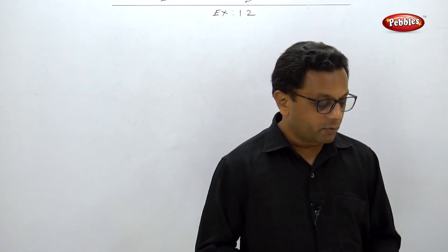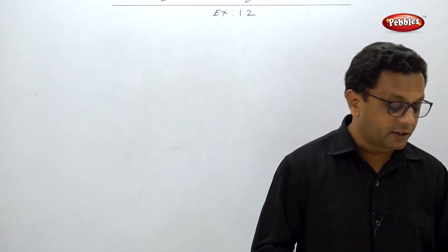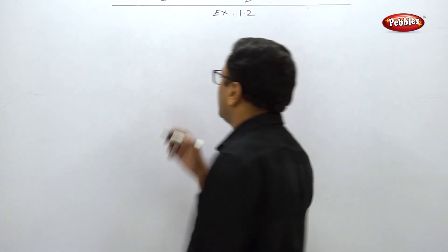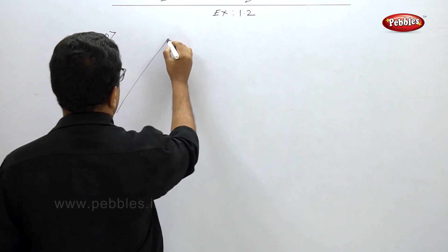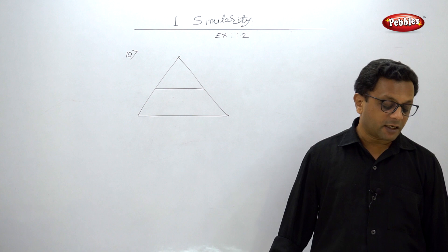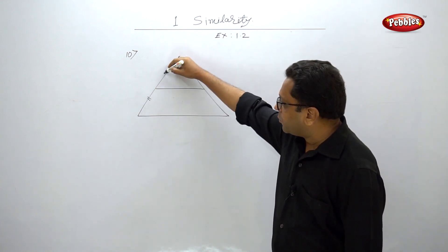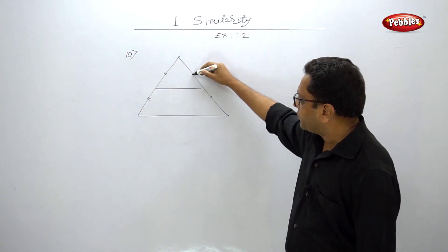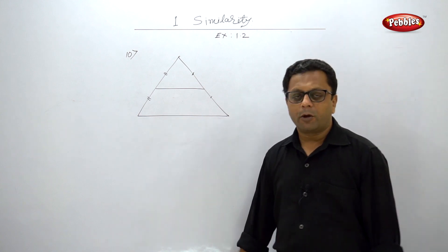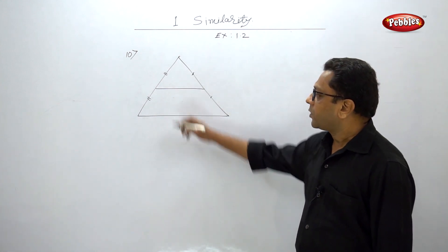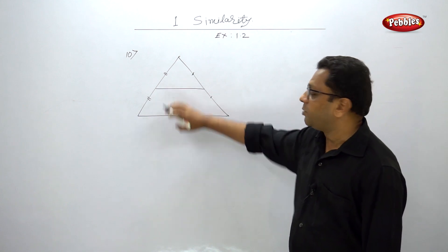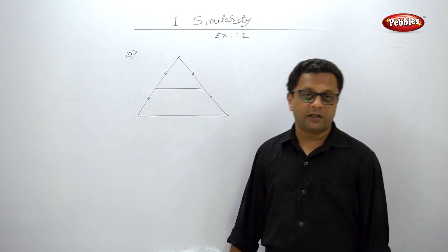Problem 10: Using the converse of BPT, prove that the line segment joining the midpoints of any two sides of a triangle is parallel to the third side. The first part is simple — the midpoints mean each half-side equals the other, so AD/BD = AE/EC = 1, and by the converse of BPT, DE is parallel to BC.